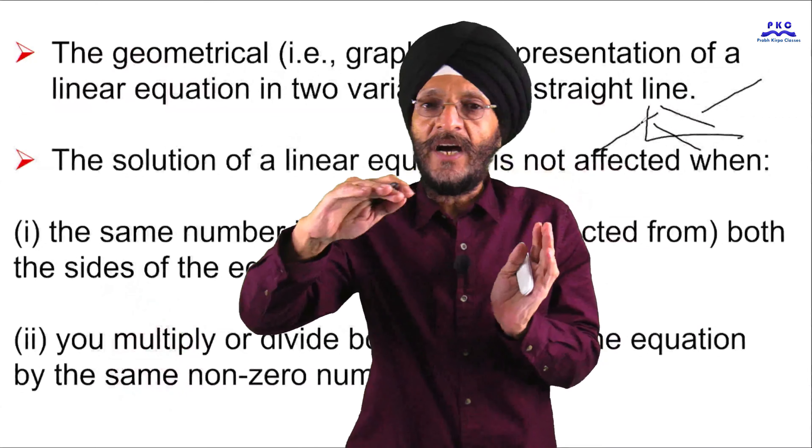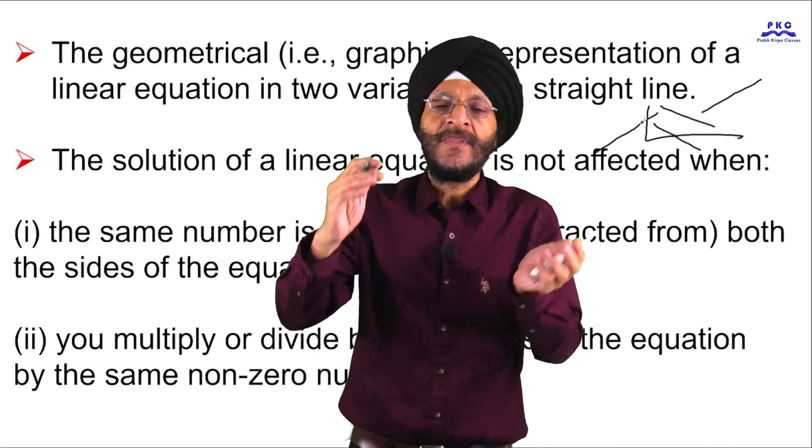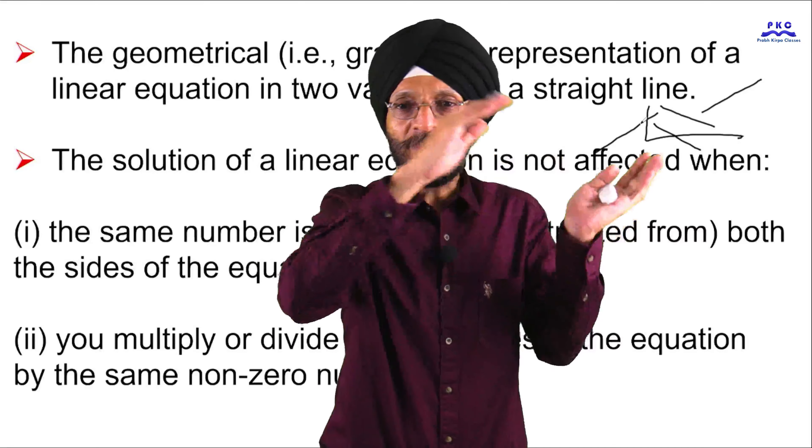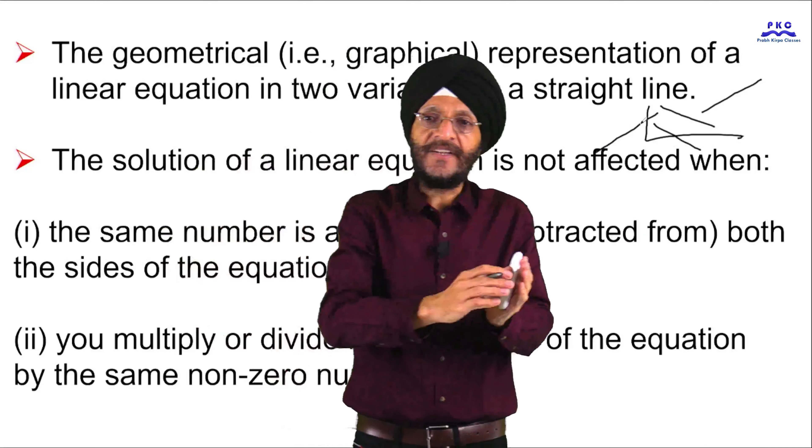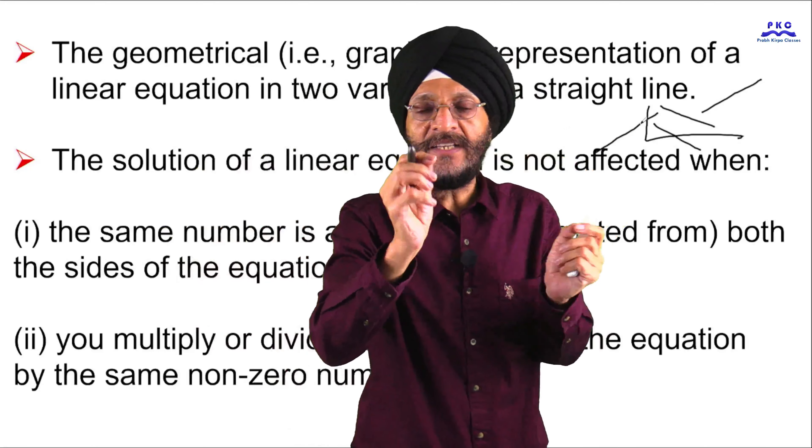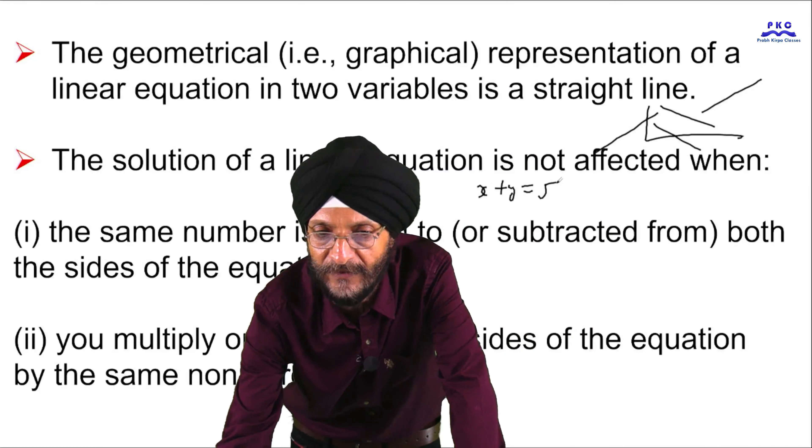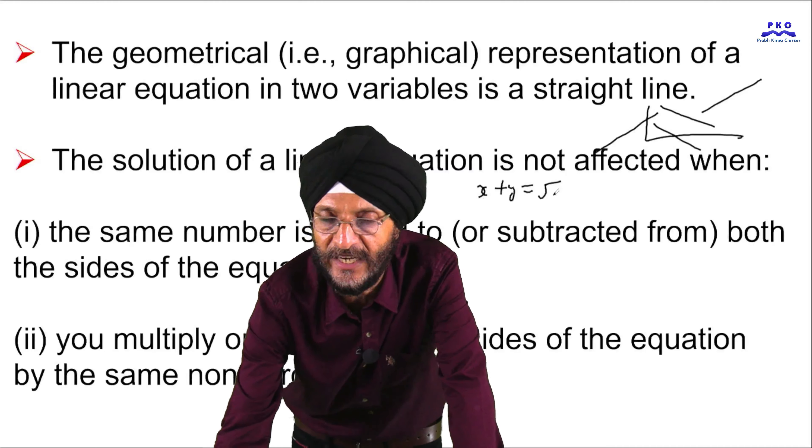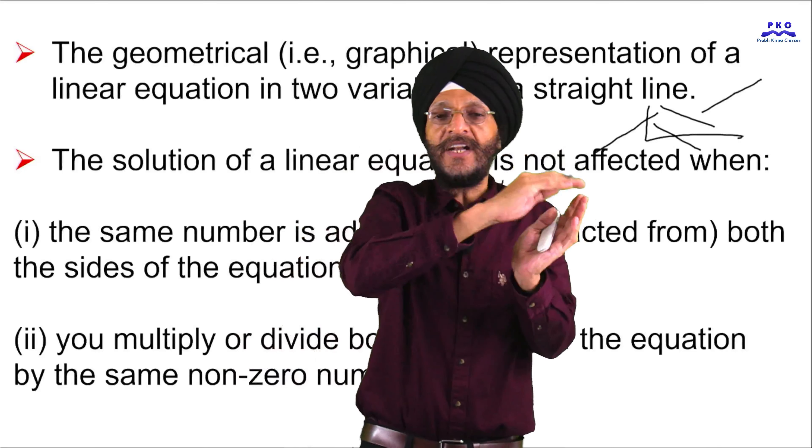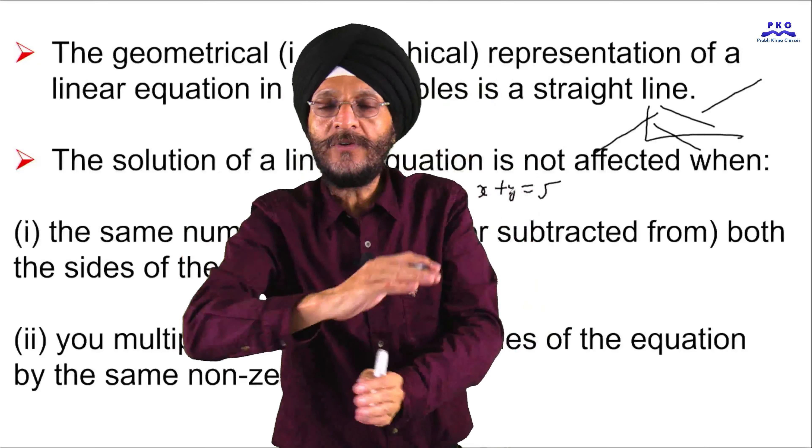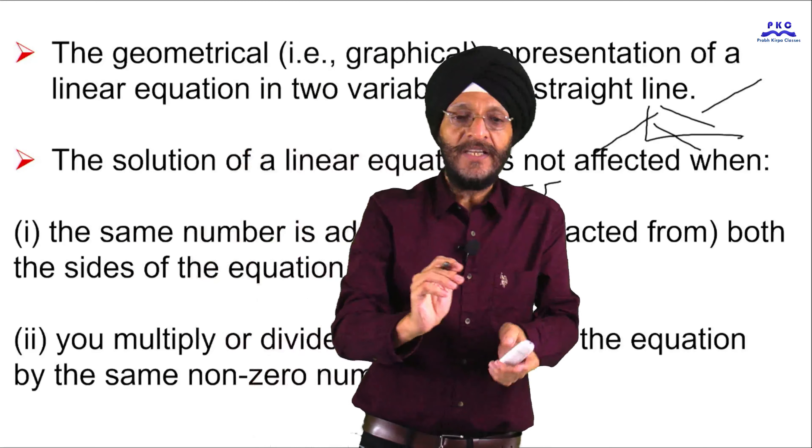But the equation will always be in a straight line. The solution of the linear equation is not affected when both sides of the equation are multiplied, added, or subtracted by the same number. That is, if this equation is, say X plus Y is equal to 5, if we add 5 on both sides or if we divide both sides by 5 or if we deduct 5 from both sides or if we multiply 5 on both sides, it will have no effect on the linear equation.